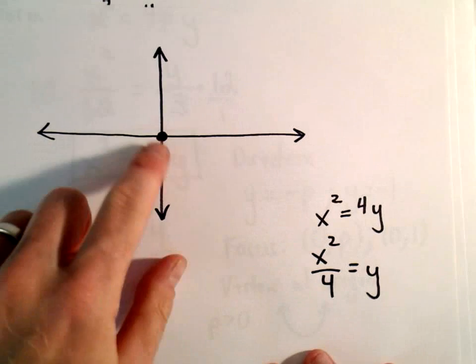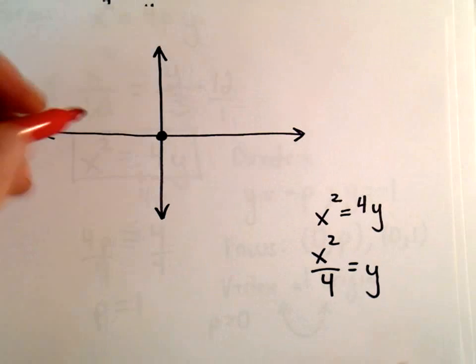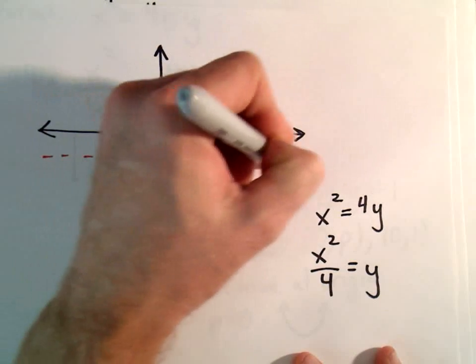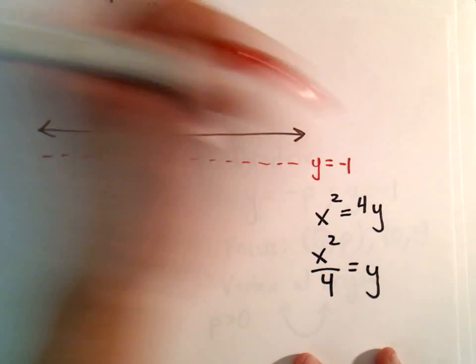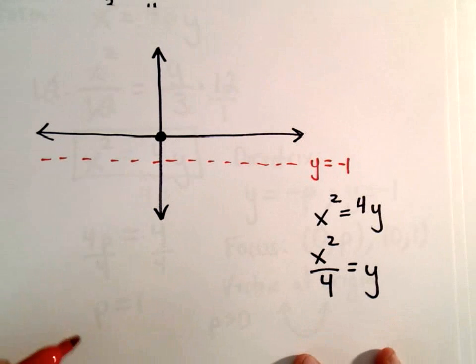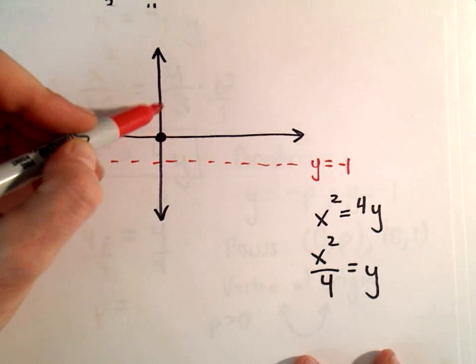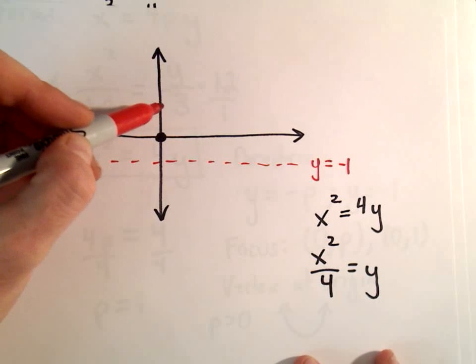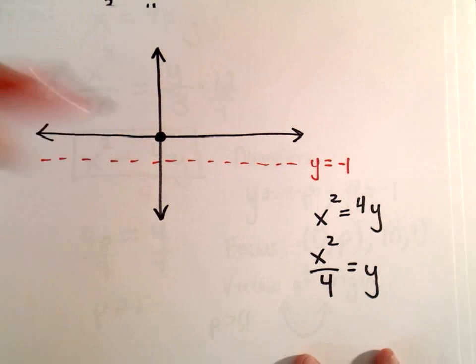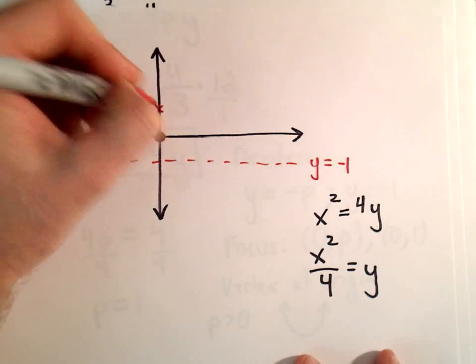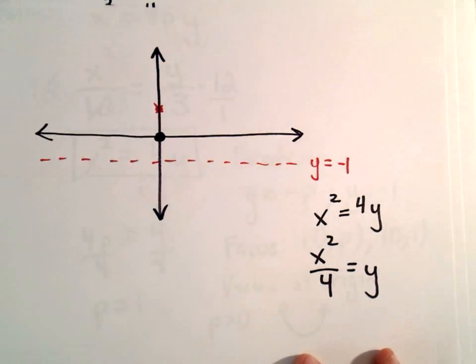I'm going to rewrite that as x squared over 4 equals y, just to help me plot some points. We know the vertex is at the origin. I'm going to put my directrix here, y equals negative 1. And we know the focus is at 0, 1. I don't want to put a dot there because usually when we put a dot, we mean that's a point on the graph. I always used to put just like a little x. We can also use a little dot as well.